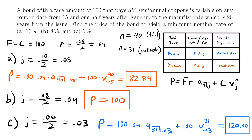That is the price of the bond when the yield rate is 3%, or a 6% nominal rate. That is how you use this chart for a callable bond to determine when to calculate its price. If you were to calculate these two prices — $82.84 and $120.00 — using the opposite dates, you would get a higher price. These two prices are the lowest possible prices for this bond given those yield rates and coupon rates.